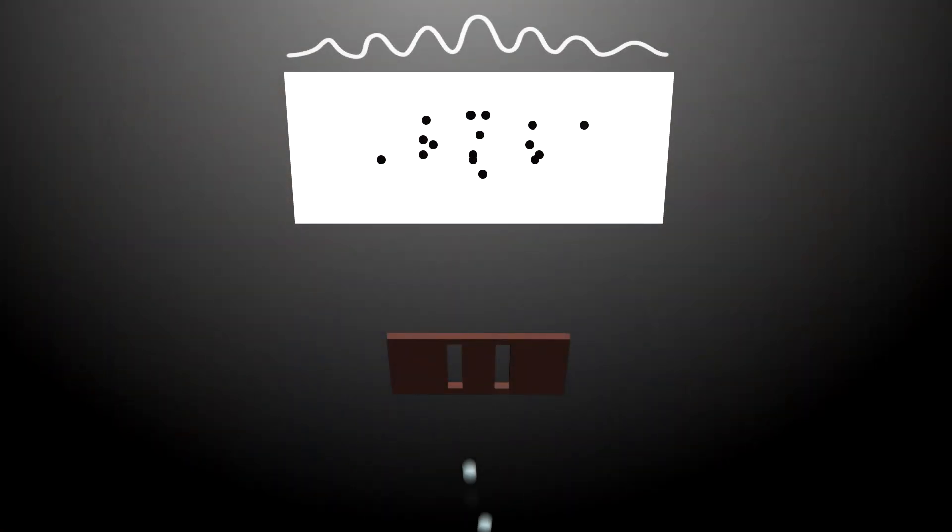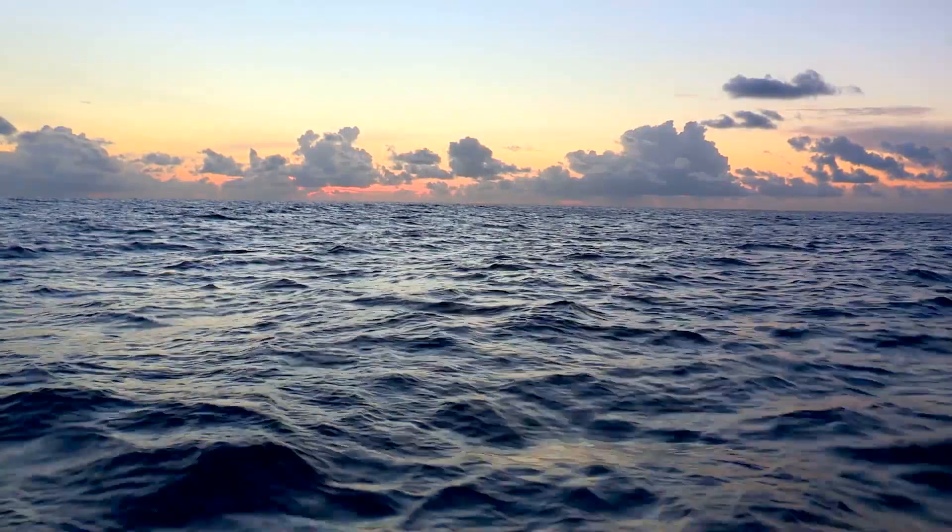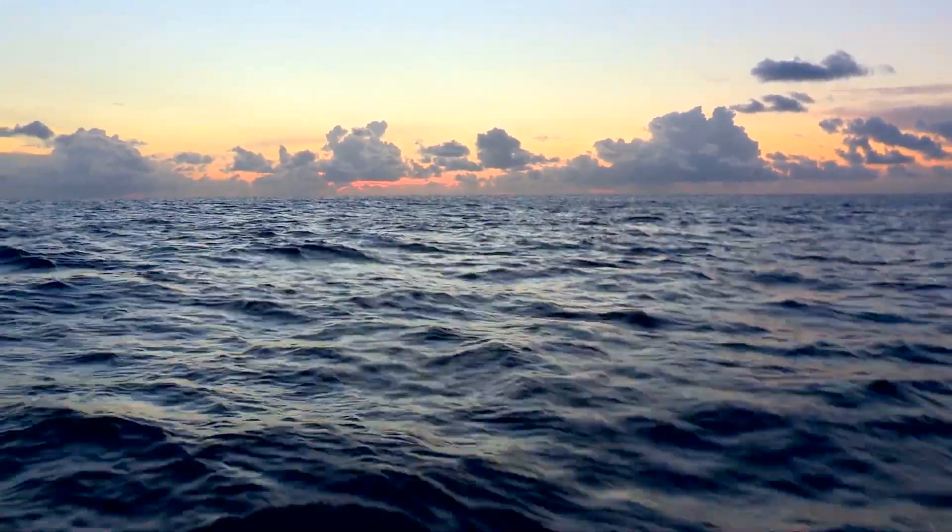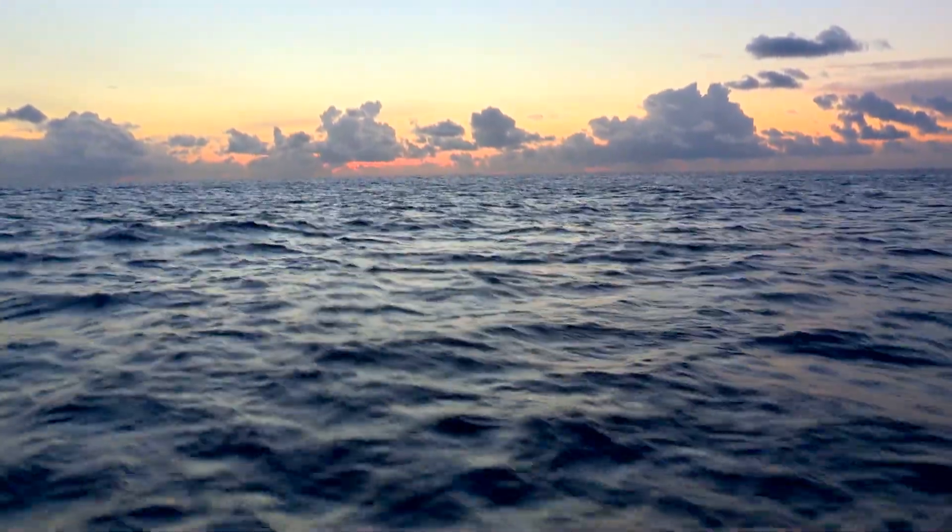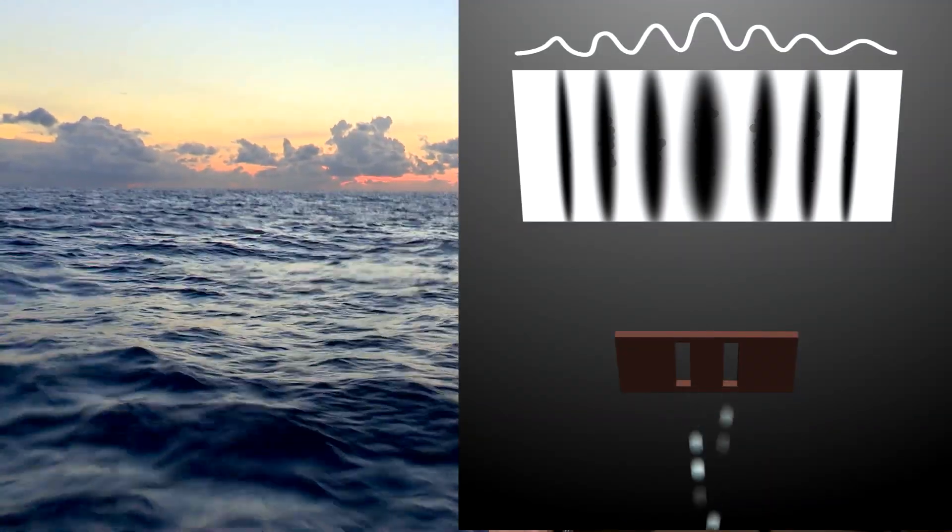This experiment was later performed with electrons, which also showed the same pattern. But people were perplexed as to what a wave of an electron actually means. We can understand water waves because we can see them. They oscillate up and down. But what is actually happening with an electron? This was a mystery.